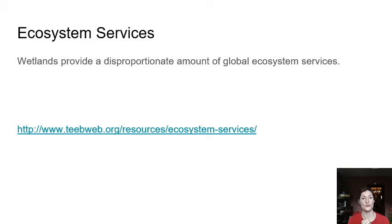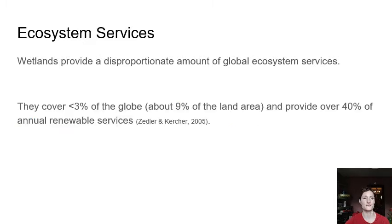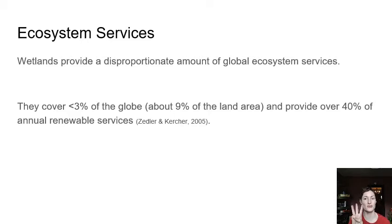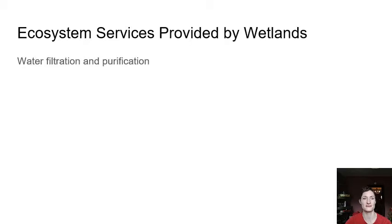Wetlands cover about 9% of the total land area of the globe but provide over 40% of annual renewable services. This is from a 2005 paper, and measurements may have changed — who does the quantifying and how they quantify it is highly variable. It depends on how many wetlands we have globally, how much area that is, how you define a wetland using those three characteristics, and how you quantify those resources. But that 9% to 40% difference is definitely disproportionate no matter how it shakes out.